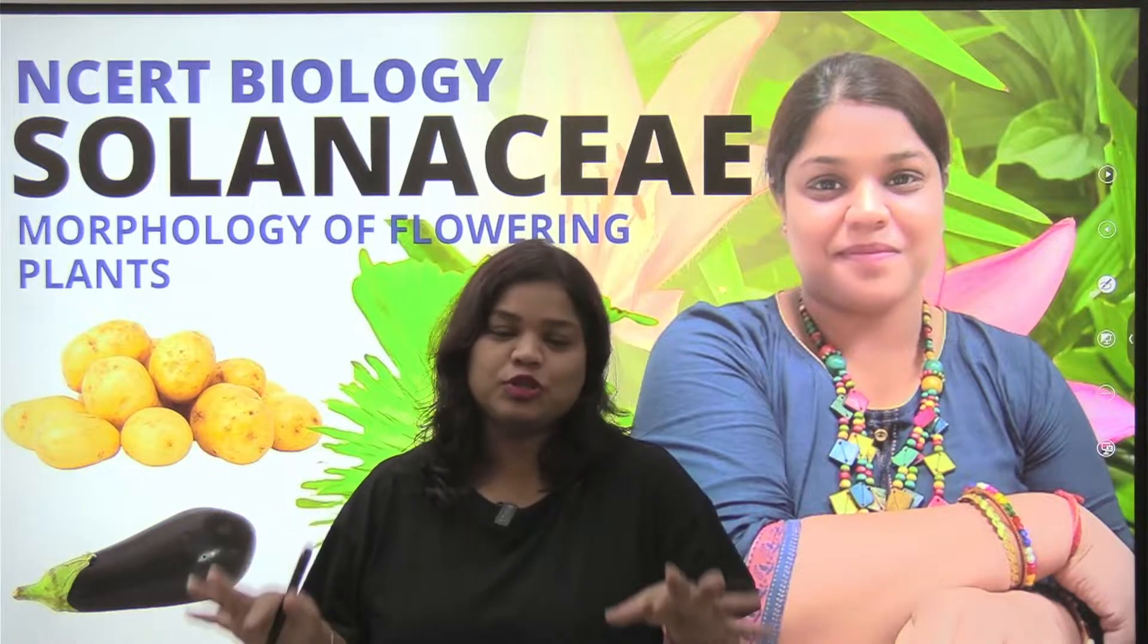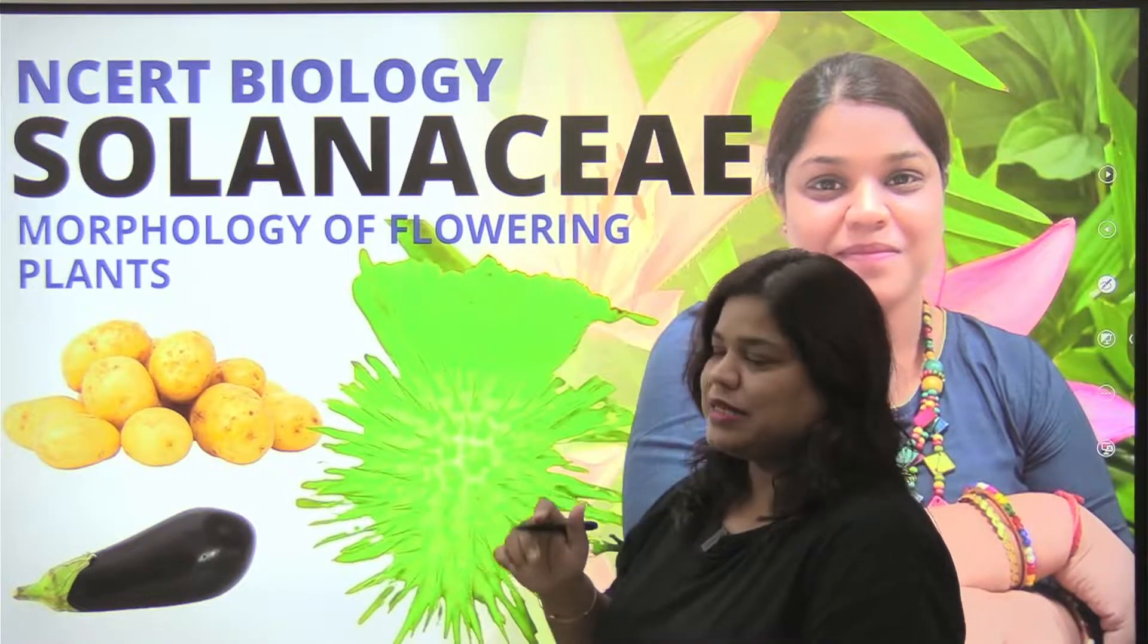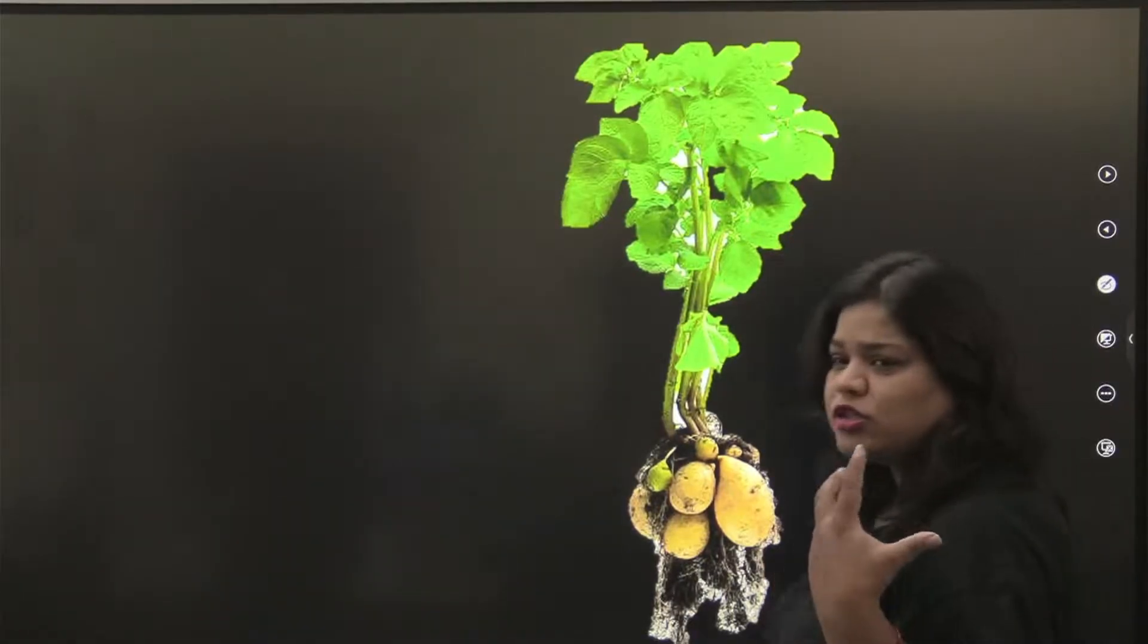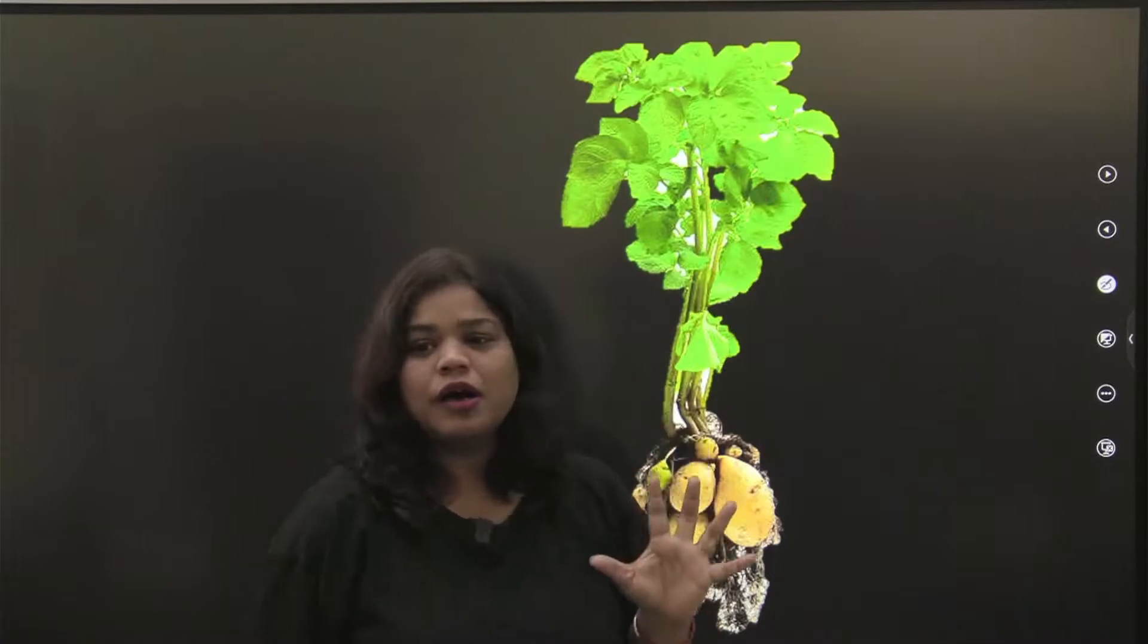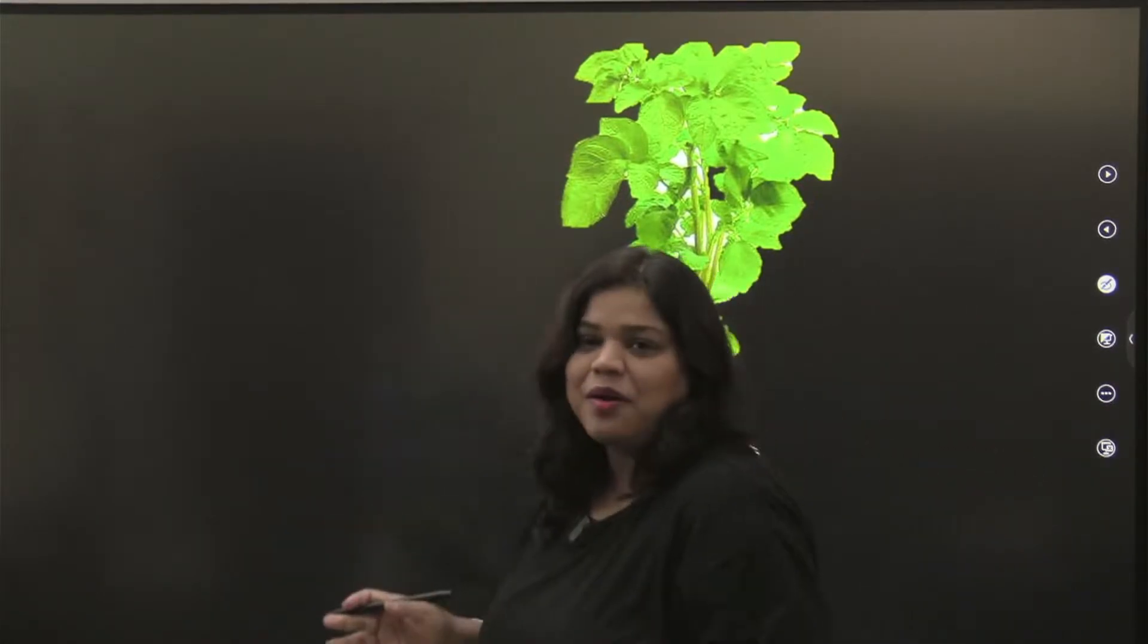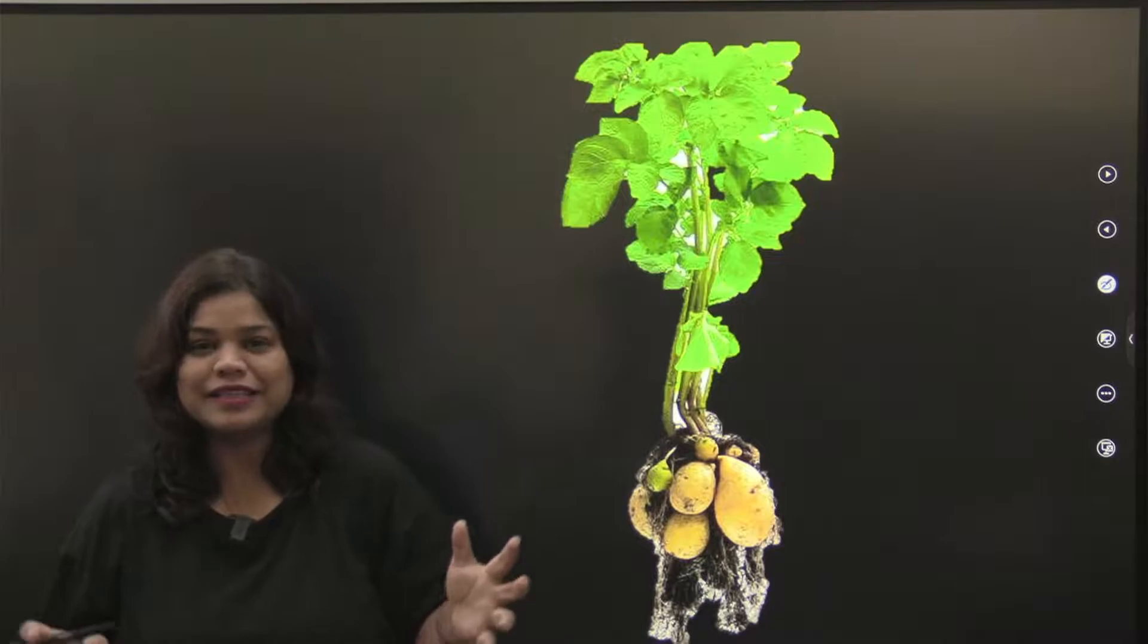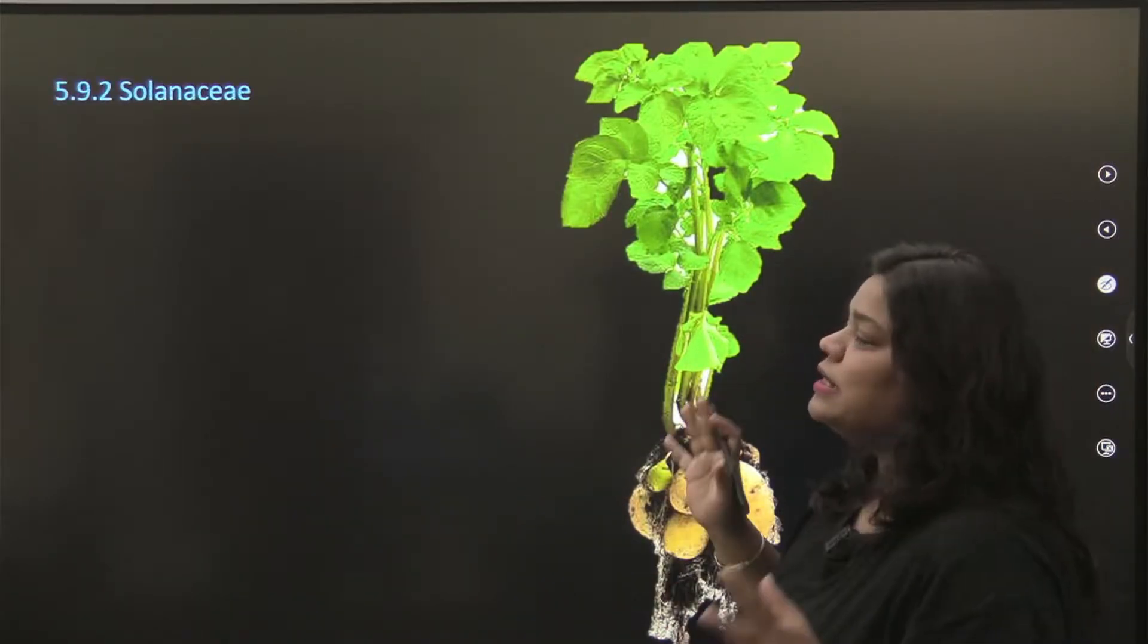Hello everyone and a very warm welcome to Meet Now, your very own NCERT destination. Now we are going to have two last families. Today we are going to have one last family right now, which is Solanaceae. Solanaceae is your aloo, brinjal, tomato family. So hop on and let's complete morphology of flowering plants. I hope you are subscribed and have pressed the bell icon so that when the notification comes to you, this is what you can say that a potato plant looks like.